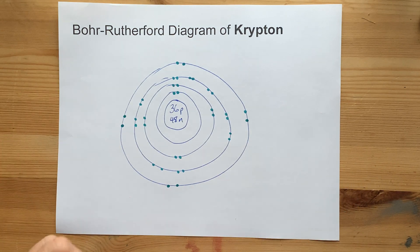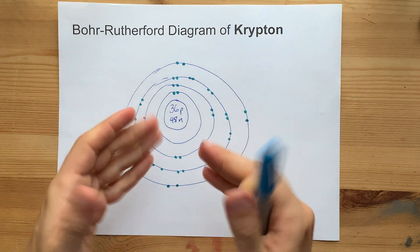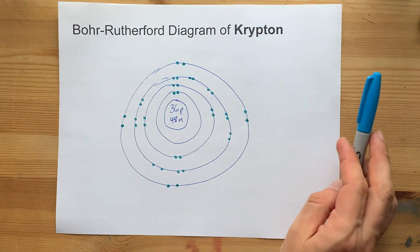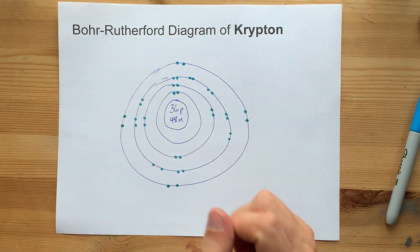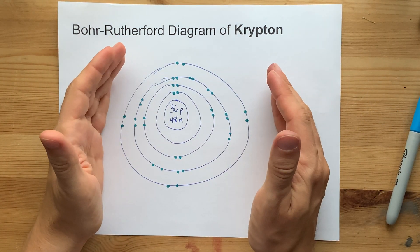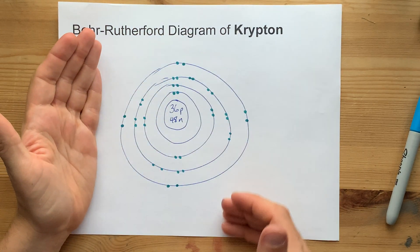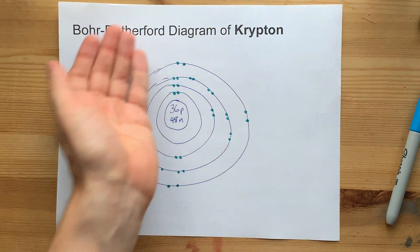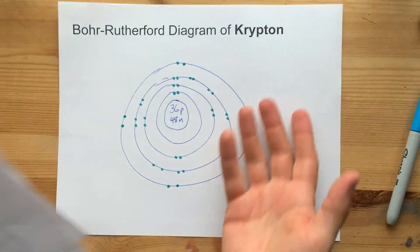That looks like a full outer shell, and it satisfies the octet rule with having eight electrons in its outer shell. But spoiler alert, once you create a fifth outer shell and put electrons there, the fourth shell can hold more. That's the way it is. I think it can hold like 32 or something.